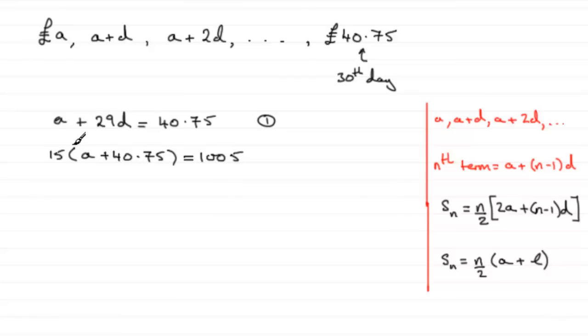And in the last part, we found this result. Okay, so call that equation two. So from two, what we could easily do is just divide both sides by 15. And if we did that, we would get A plus 40.75 equals 1005 then divided by 15. And that comes out at 67 exactly.